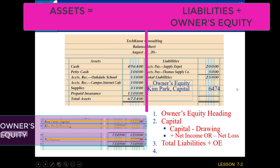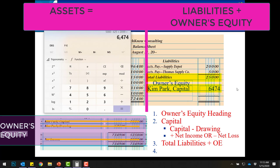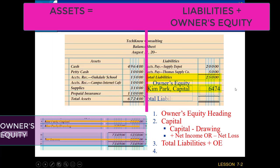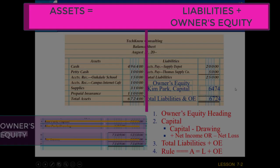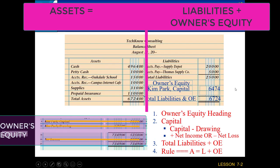Now I need to total up the right side of the accounting equation — liabilities and owner's equity. I take the capital amount of $6,474 and add total liabilities of $250, giving $6,724. That total liabilities and owner's equity equals my total assets of $6,724 — which is the whole point of the accounting equation: assets equals liabilities plus owner's equity. So we can double rule and we are done with our balance sheet.